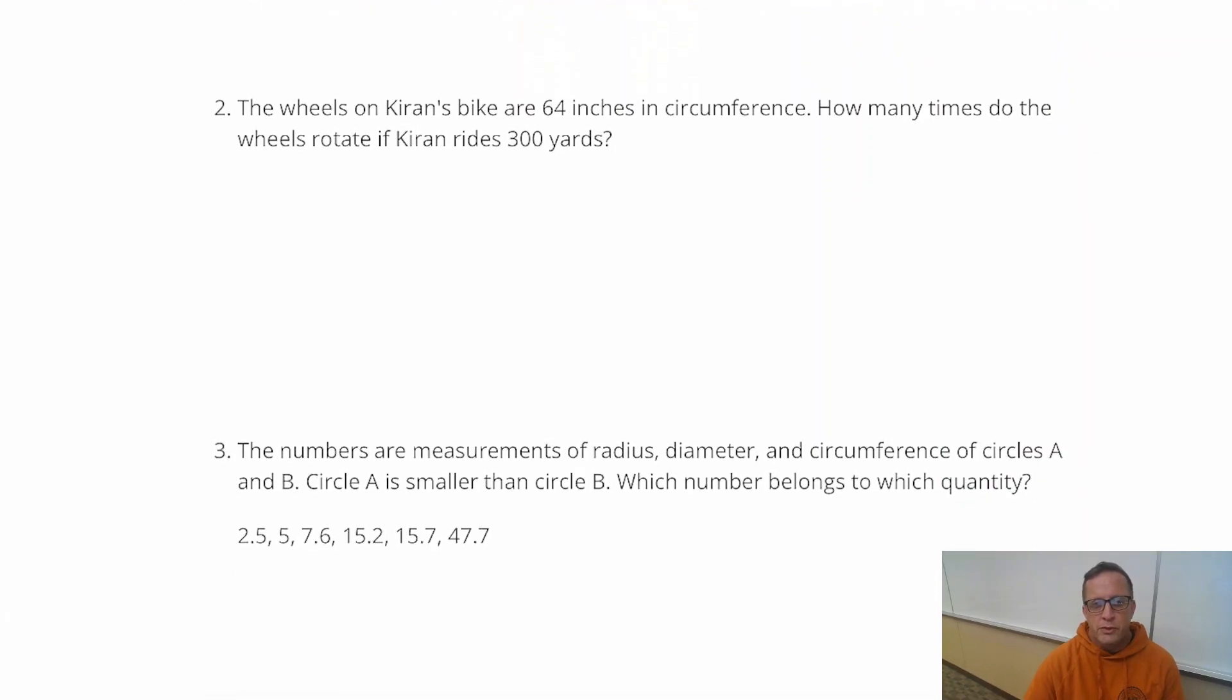Number two, the wheels on Kiran's bike are 64 inches in circumference. How many times do the wheels rotate if Kiran rides 300 yards? Now the thing that pops out at me right away here is that for problem number two, it gives us two different units. In the first part of the problem, where it describes his bike, it gives us inches, 64 inches.